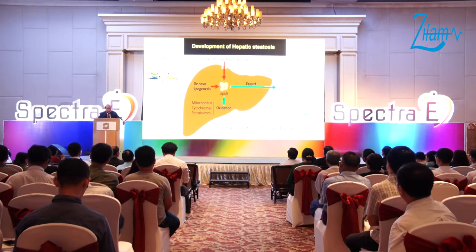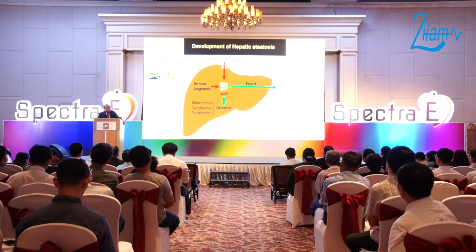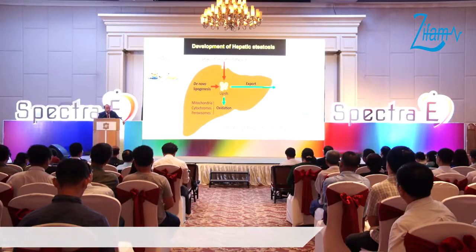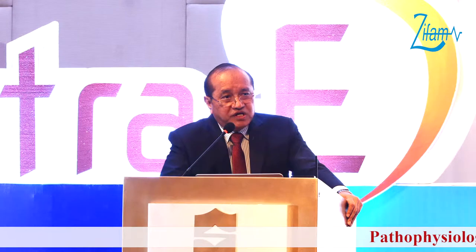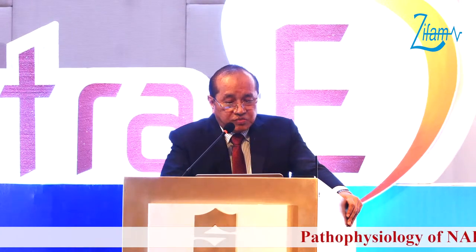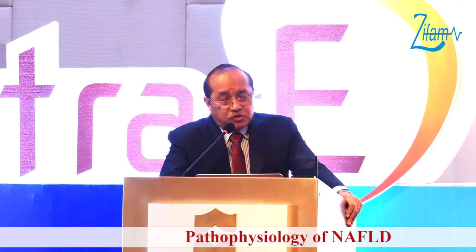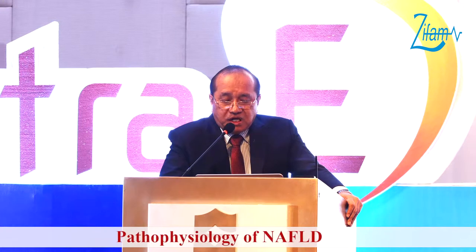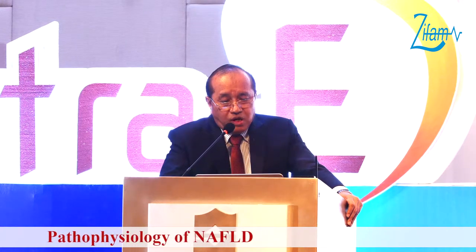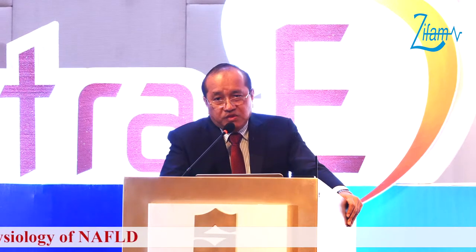Fat acquisition occurs through only two ways: uptake of circulating fatty acids and de novo lipogenesis. Fat utilization occurs through beta oxidation and export to the periphery through very low-density lipoprotein. When there is an imbalance between acquisition and disposal, there will be an accumulation of fat in the liver.